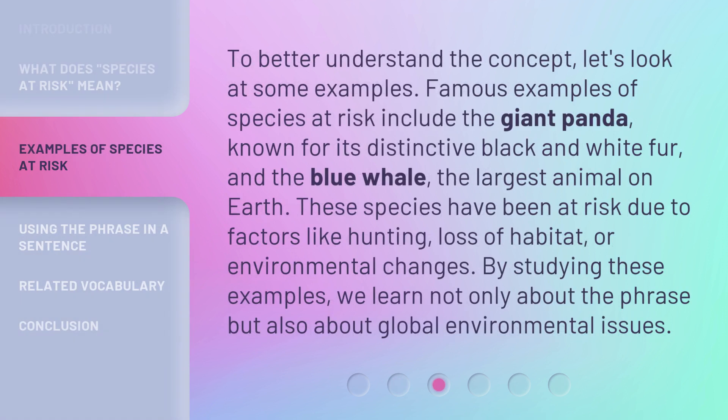To better understand the concept, let's look at some examples. Famous examples of species at risk include the giant panda, known for its distinctive black and white fur, and the blue whale, the largest animal on Earth. These species have been at risk due to factors like hunting, loss of habitat, or environmental changes. By studying these examples, we learn not only about the phrase, but also about global environmental issues.